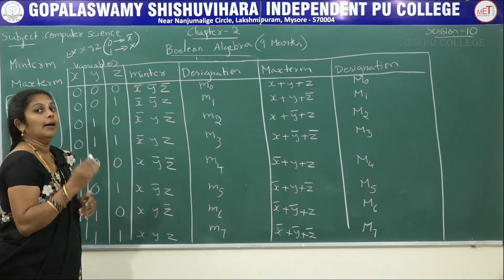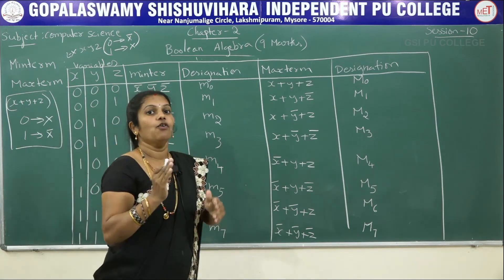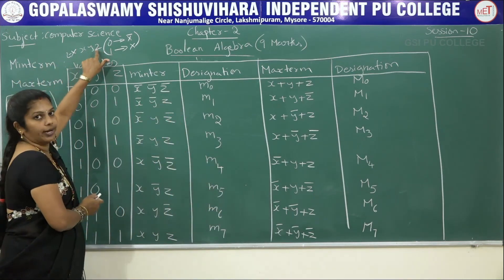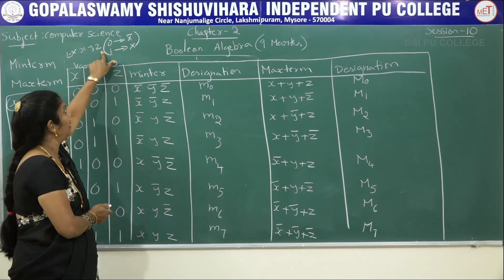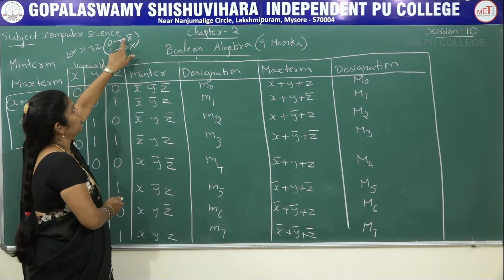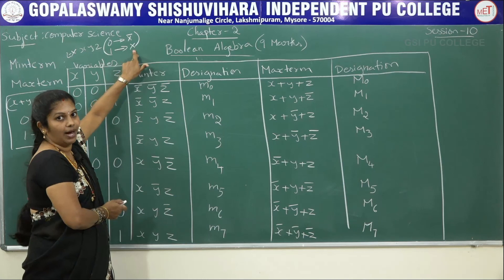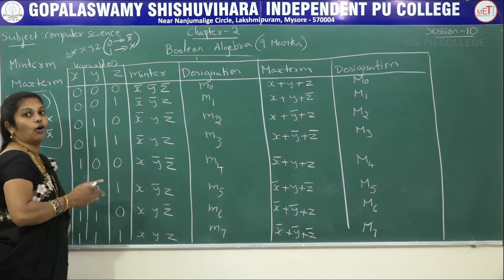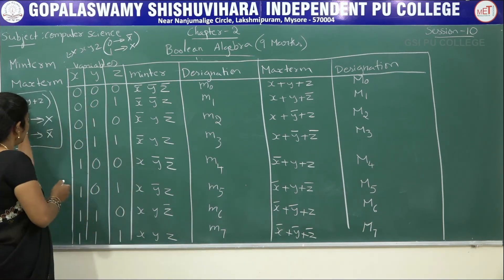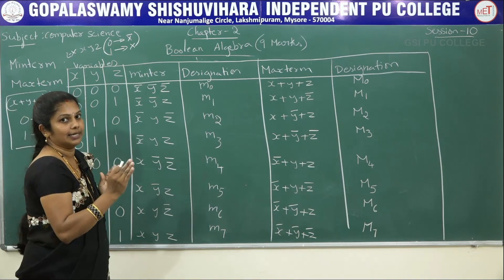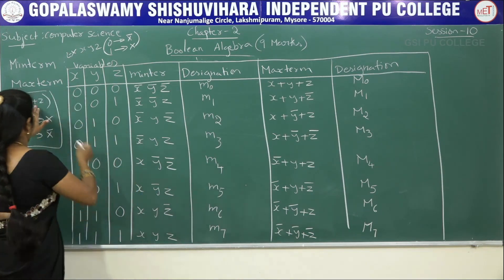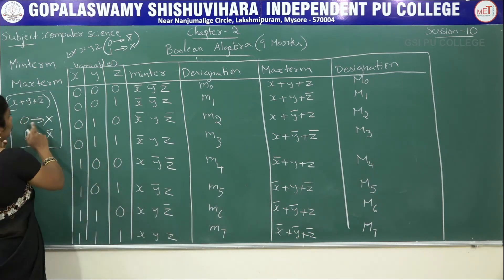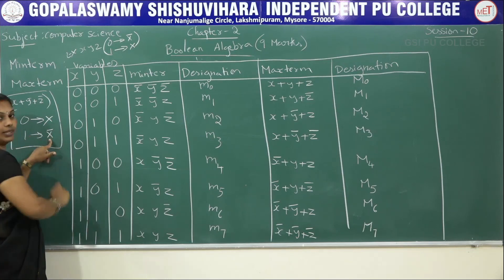Let me recall once again: a minterm is a product of all variables with or without complement, where 0 converts to a bar and 1 converts to without bar. A maxterm is a sum of all literals — using the plus operator — with or without bar, but here 0 converts to without bar and 1 converts to with bar. This is the key difference between minterm and maxterm.